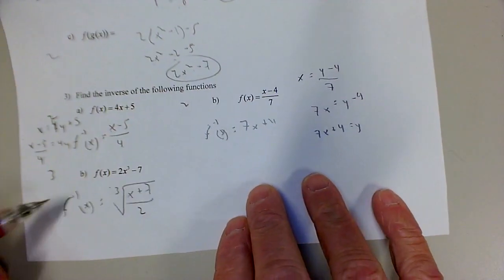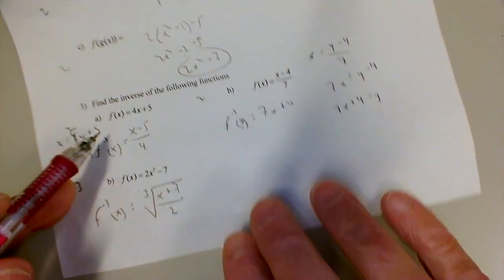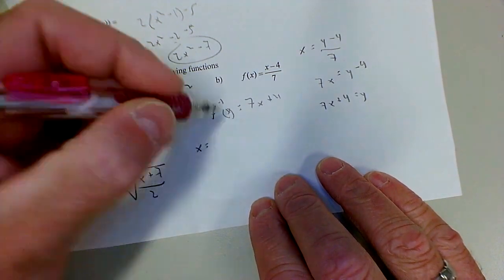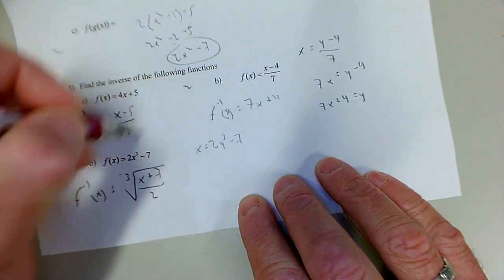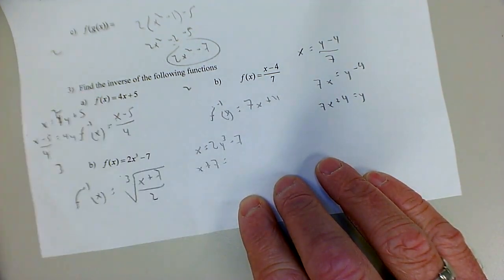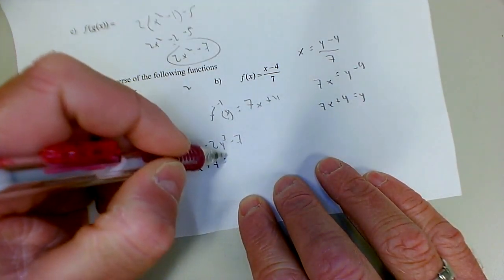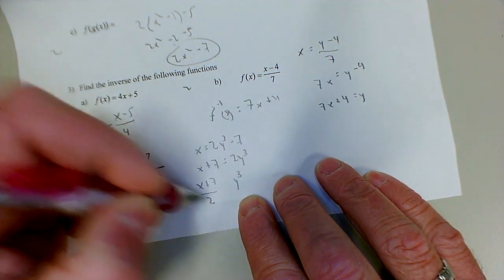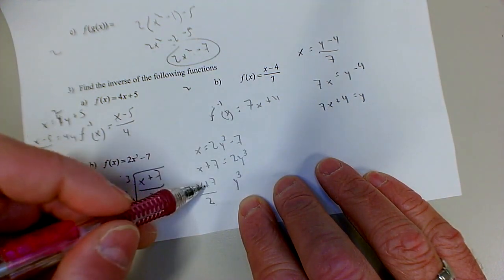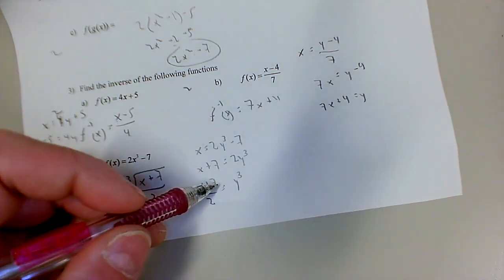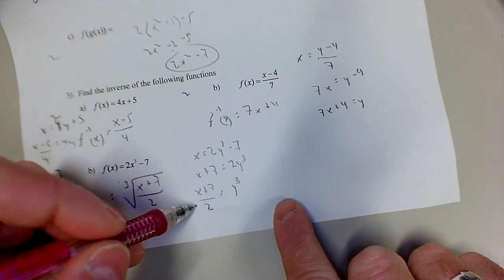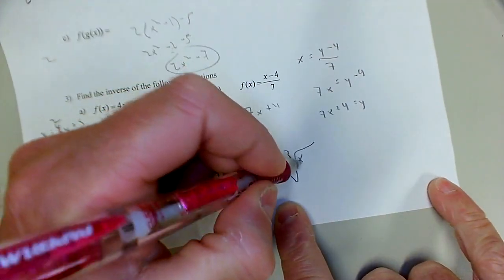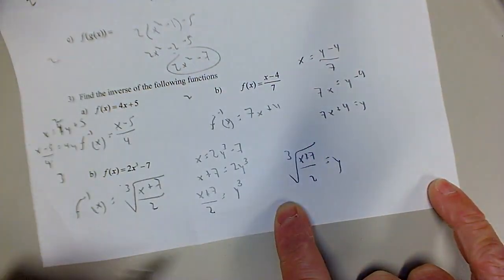This last one's a little bit more complicated. f(x) is 2x-cubed minus 7, so this becomes x equals 2y-cubed minus 7. Remember, when you're solving, you have to deal with the order of operations backwards, which means the minus 7 has to go first. Then you're dividing everything by 2. To undo the cube, you have to take the cube root. So, you end up with the cube root of x plus 7 over 2. That's how we get our final answer.